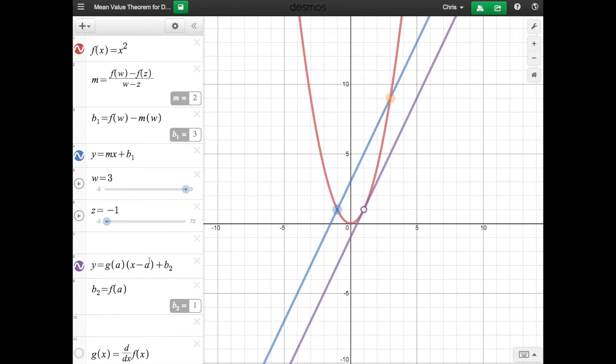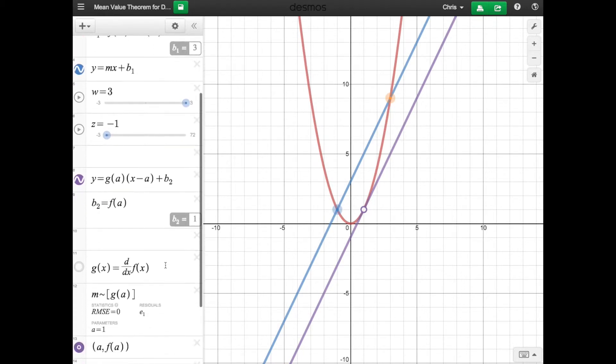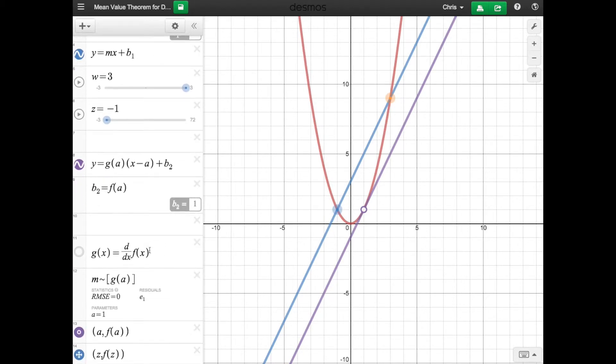That is represented by the purple here. So this purple right here, here's the equation for it. If you care to know where it came from, g(x) is equal to the derivative of f(x). That's what this is stating right here. And then I basically just set the slope equal to g of a.